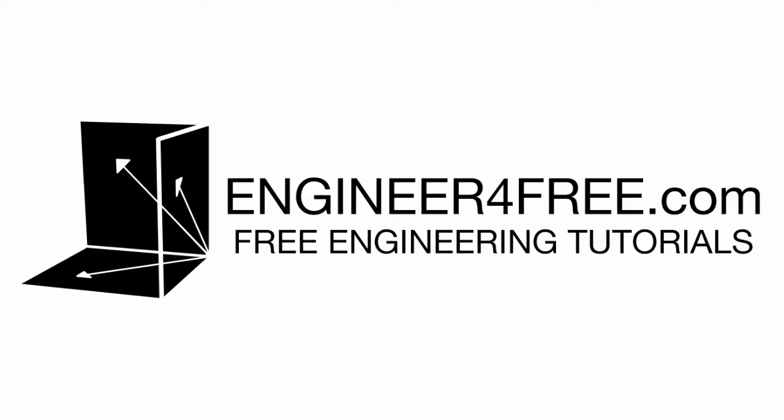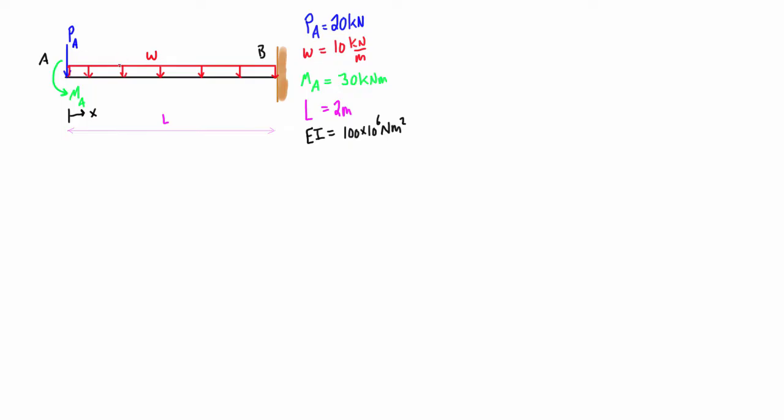All right, welcome back guys. We want to use Castigliano's theorem to find a deflection at point A here on this cantilever beam. Point A is at the location of an applied load, and this is great for us using Castigliano's theorem.